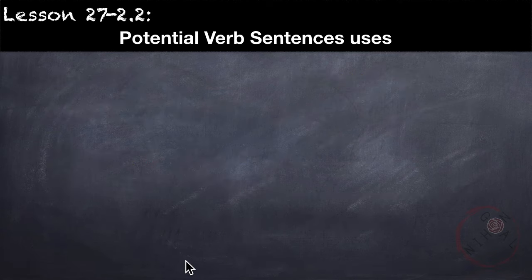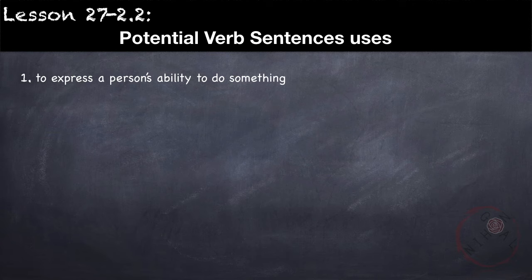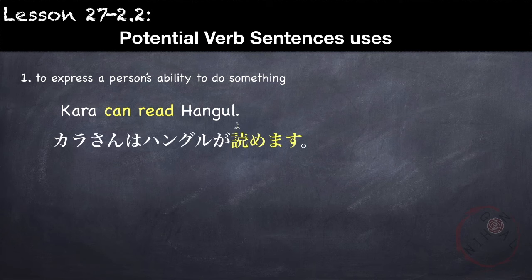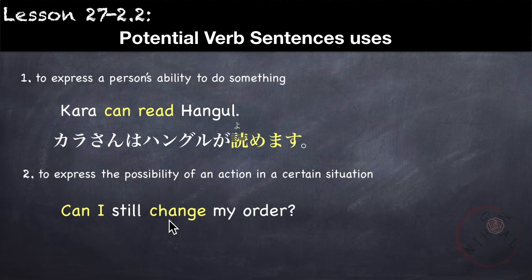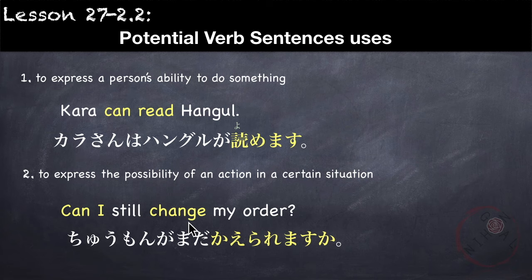Next: potential verb uses. There are two uses. The first is to express a person's ability to do something — for example, Kara can read kanji. The second use is to express the possibility of an action in a certain situation. For example: Can I still change my order? 注文がまだ 変えられますか？変えます is a Group 2 verb, so it becomes 変えられます.